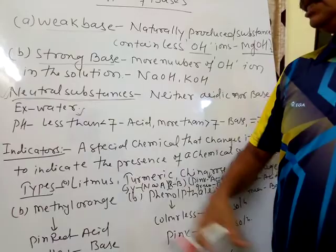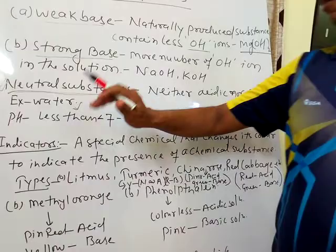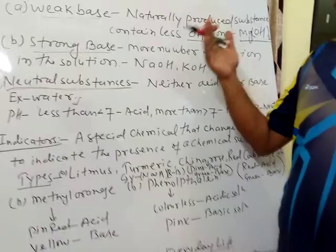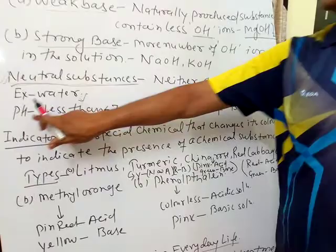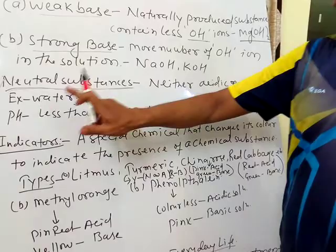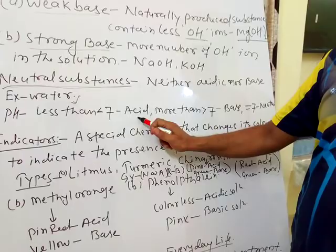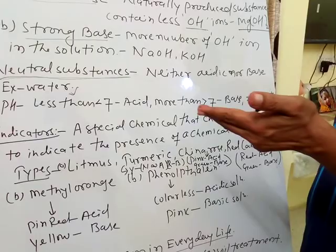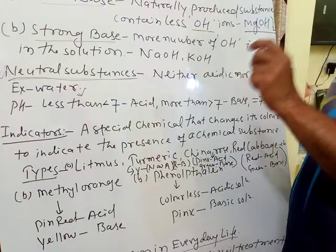Neutral substances are indicated by the pH scale. The pH paper, like litmus paper, indicates whether a substance is acidic or basic in nature. By this pH paper, numbers are indicated. If the value of pH is less than 7, then the substance is acidic in nature. As much as the value decreases, it indicates the strength of the acid — a stronger acid will have a lower pH value.